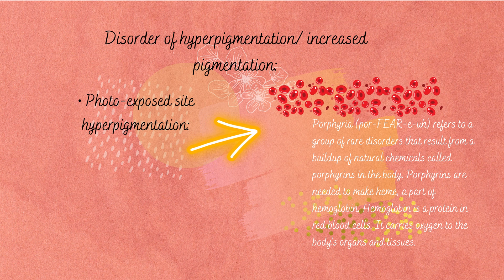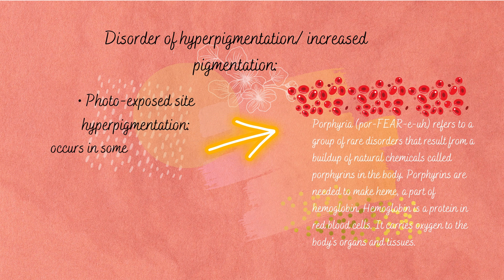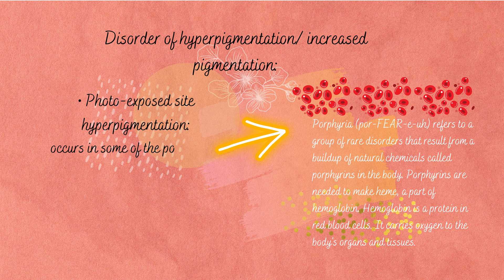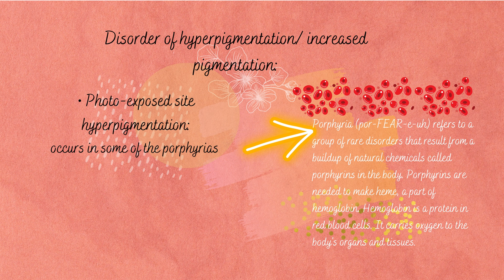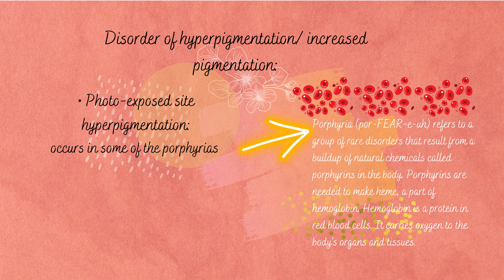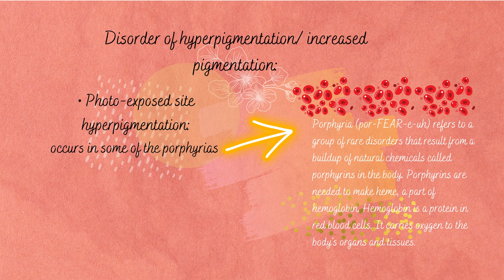Photo-exposed site hyperpigmentation occurs in some of the porphyrias, but can also be drug-induced, with amiodarone and chlorpromazine. Porphyria refers to a group of rare disorders that result from a buildup of natural chemicals called porphyrins in the body.